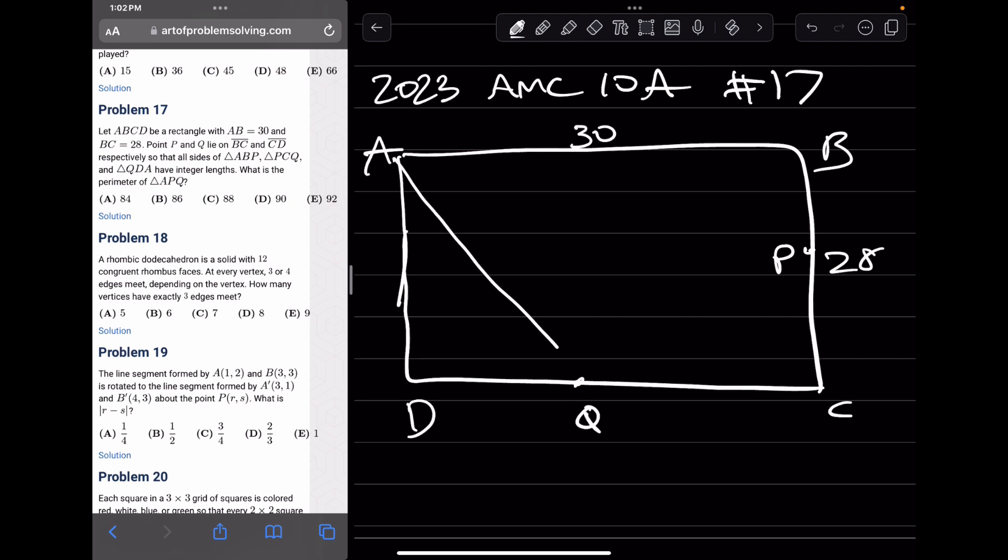And we want to figure out the perimeter of this triangle here. So let's call this X, let's call this side Y, let's call this side Z. So we want to find out what X plus Y plus Z is. And since this question says that all of the triangles formed here all have integer side lengths, we can see that this is telling us to use Pythagorean triples.